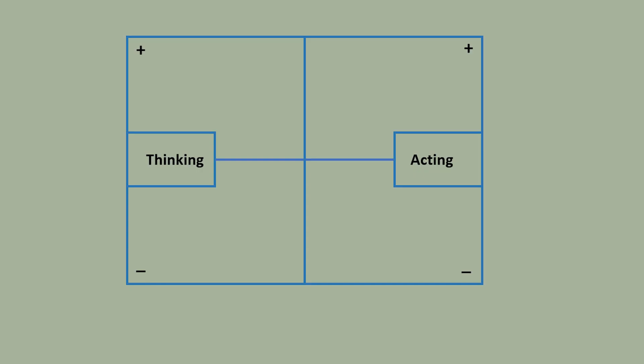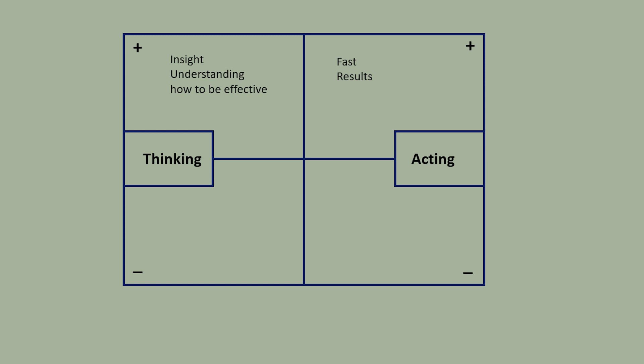Johnson uses what he calls a polarity map to understand how interdependent opposites work. This is what a polarity map looks like. Each way of acting has an upside. There's some benefit that comes from that way of doing things. Thinking, for instance, gives us insight into how to really be effective. And action is what enables us to quickly get important results. I'm sure you could add more detail to each of those upsides.